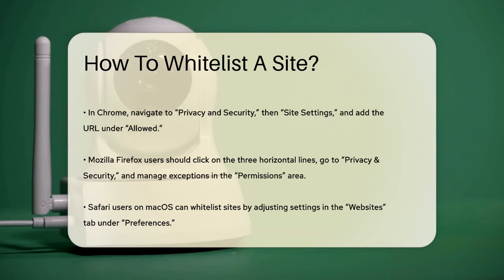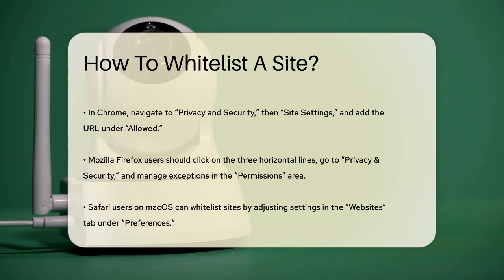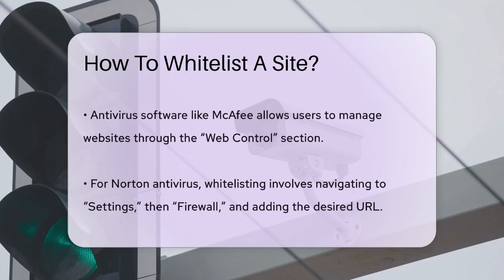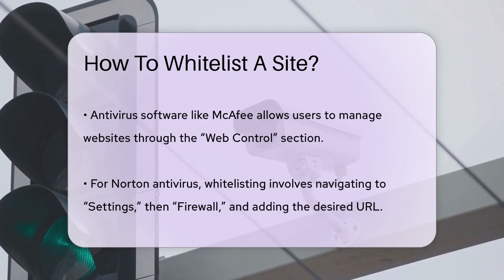Now, what if you're using antivirus software or managing network settings? In antivirus programs like McAfee, you can open the application, navigate to the Web Control section, click on Manage Websites, and select Add URL to enter the website's URL.